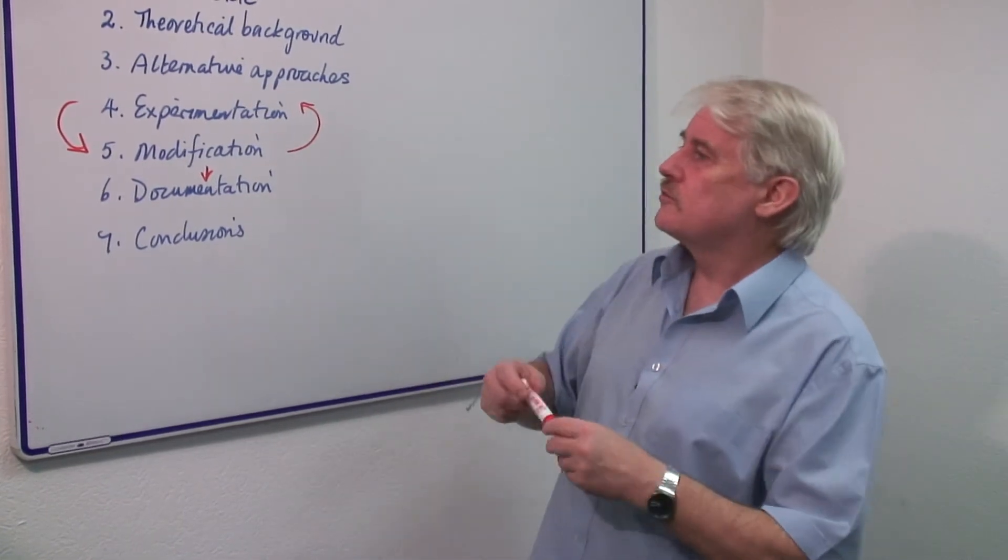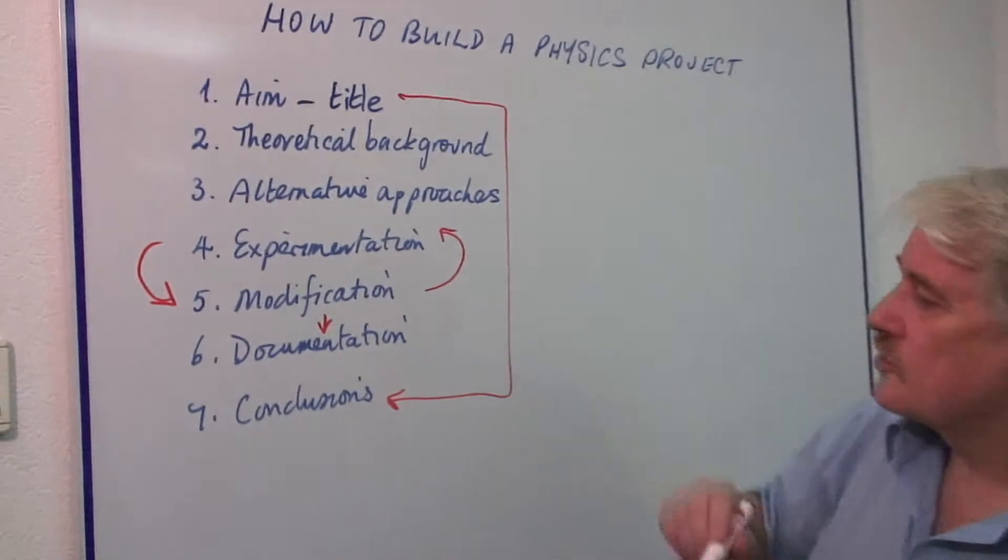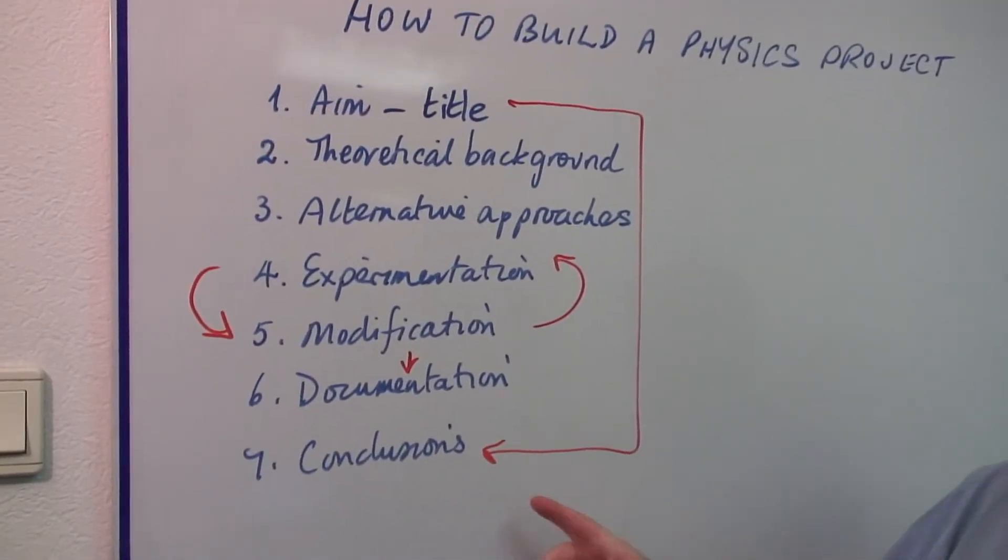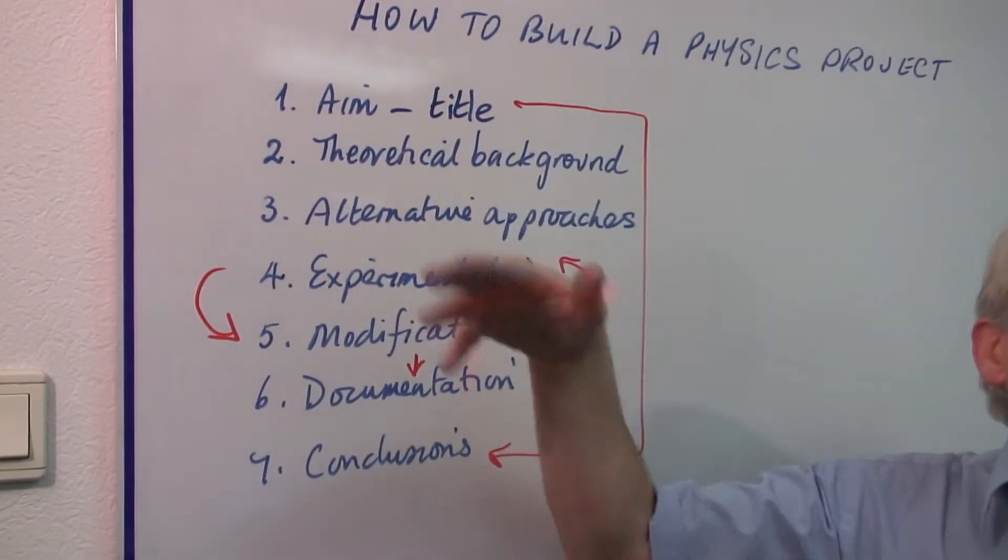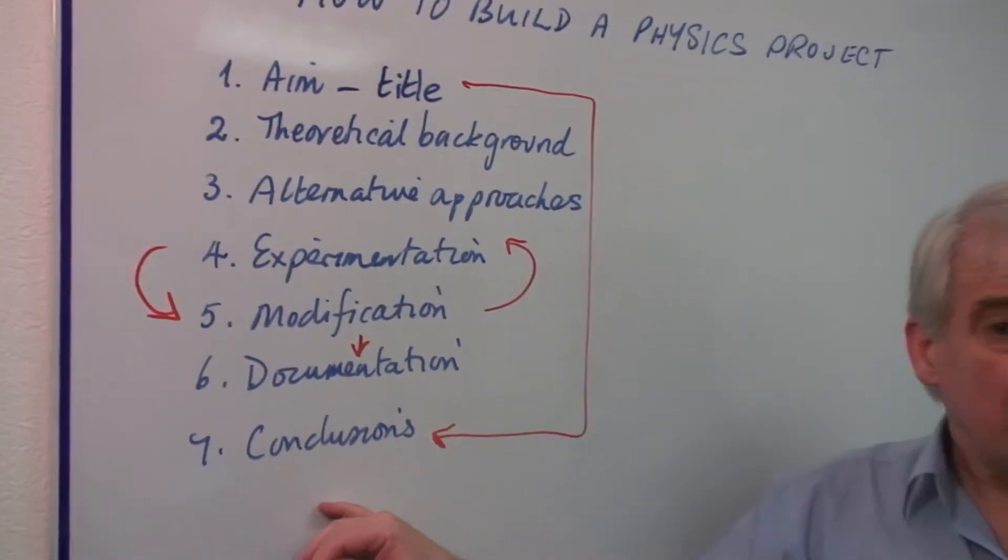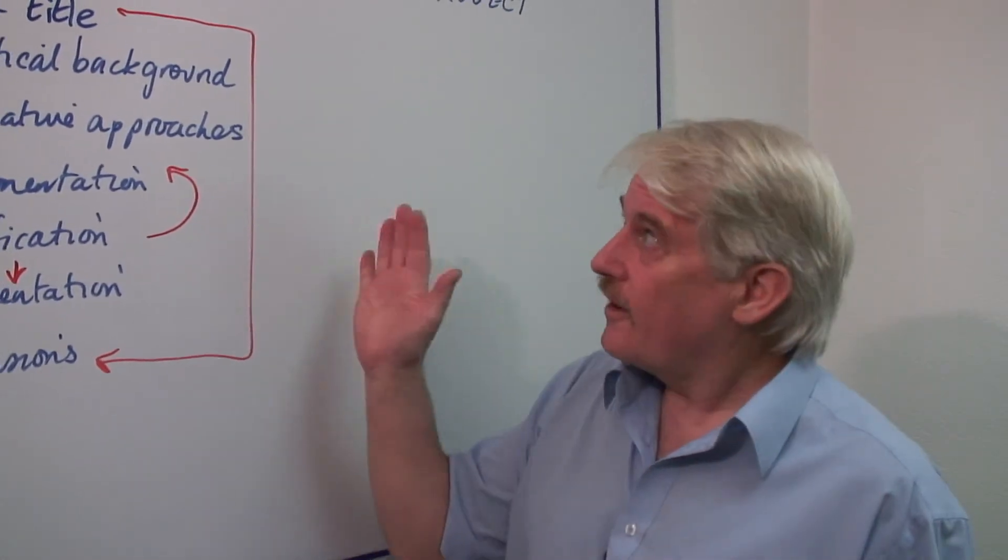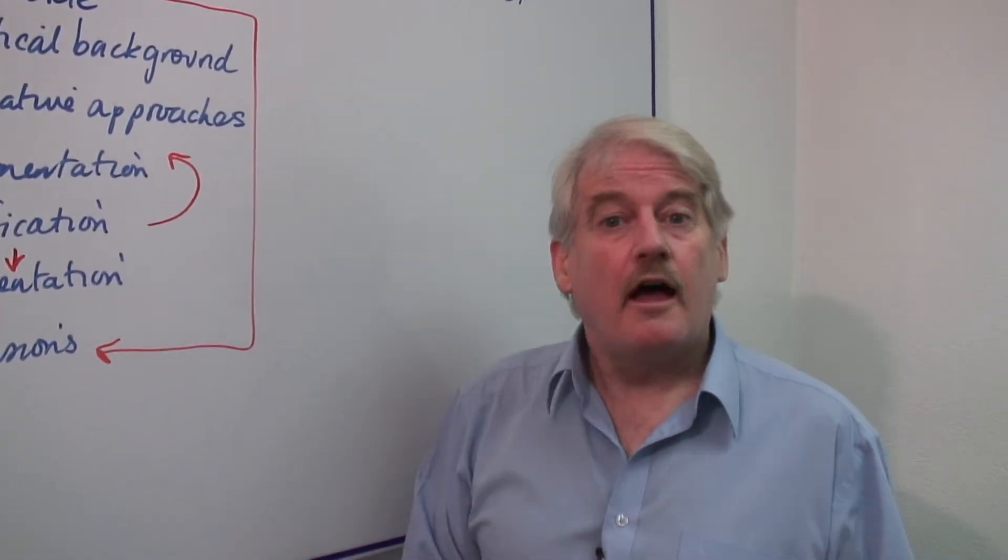And the conclusions need to relate to the title. So the title and the conclusions are linked because if your aim was to find out a certain thing, then your conclusion should be that that's what you have found out. So in brief, that is how you would build a physics project.